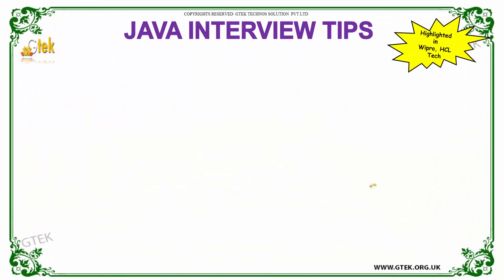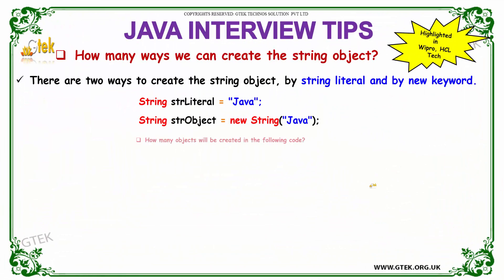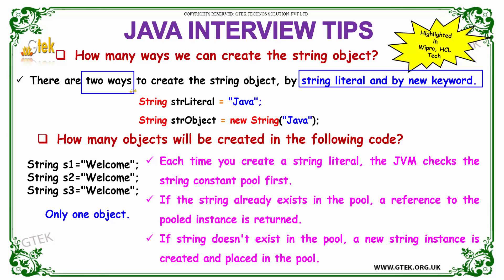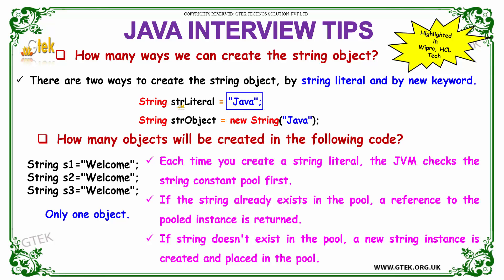The next question is: how many ways can we create a string object? There are two ways to create a string object — by using a string literal and by using the new keyword. For example, a string with value 'java' can be created using a string literal with the command str_literal.